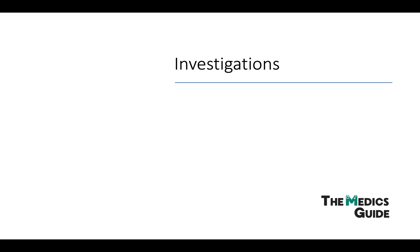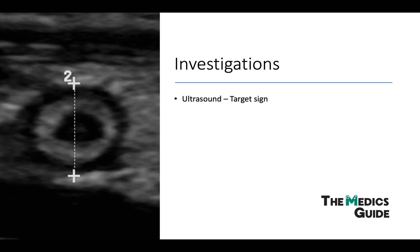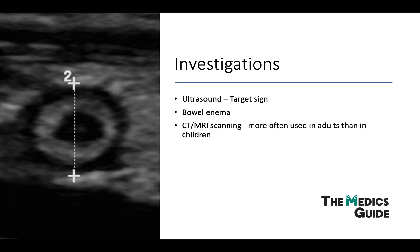For investigations, ultrasound is quick and easy to organize. You can see what we call the target sign — circles inside of each other — on ultrasound. We can also use enemas, which I'll go into shortly. CT and MRI scans are more often used in adults.